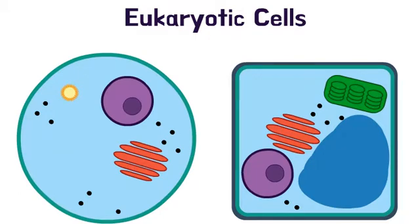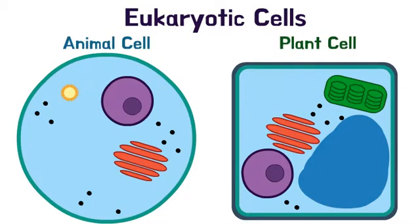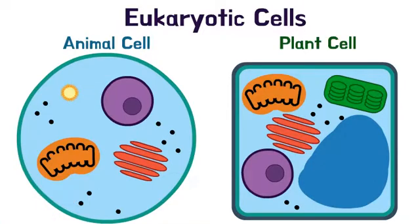Eukaryotic cells are large and complex cells that contain membrane-bound organelles such as the nucleus. We know that both animals and plants are made of eukaryotic cells. All eukaryotic cells contain mitochondria, also known as the powerhouse of the cell. This organelle is responsible for making ATP.